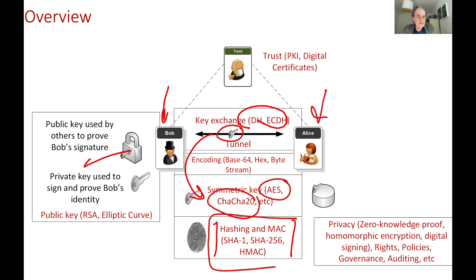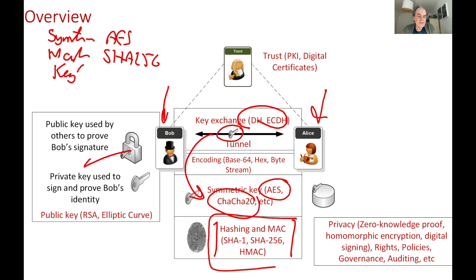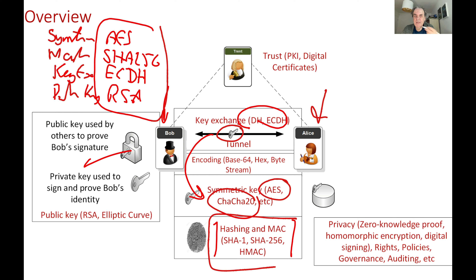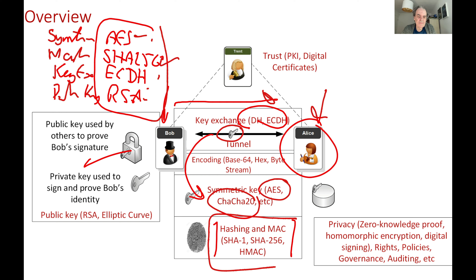For our tunnel we need to agree the symmetric key method such as AES. We need to agree the hashing method such as SHA256. We need to agree the key exchange method such as Elliptic Curve Diffie-Hellman, and we need to agree on the public key method that we want to use to authenticate the other side or the public key of the server, and that might be RSA. Bob will offer a whole range of cipher suites and Alice will pick one of those and they will agree to the characteristics of the tunnel.